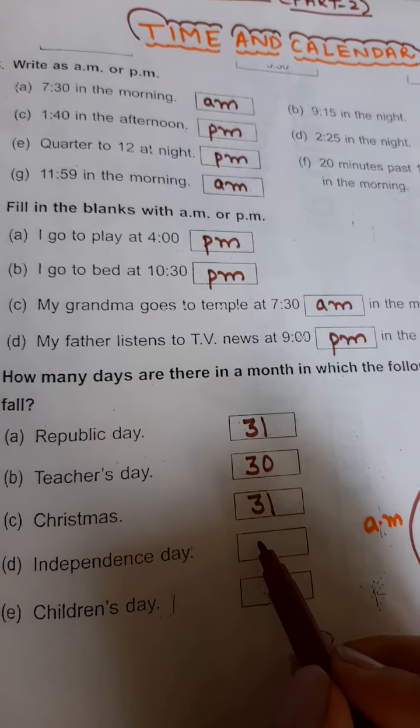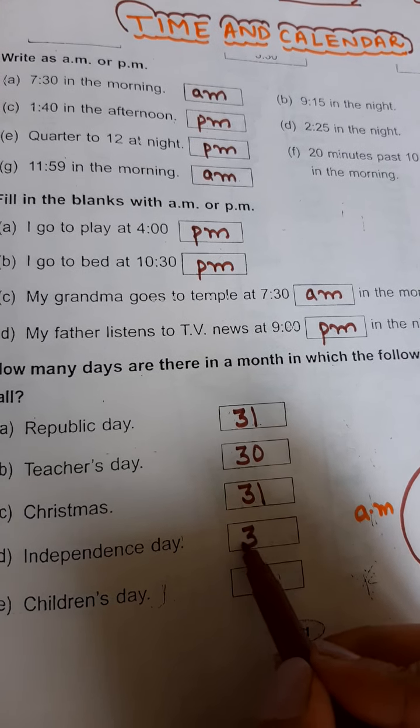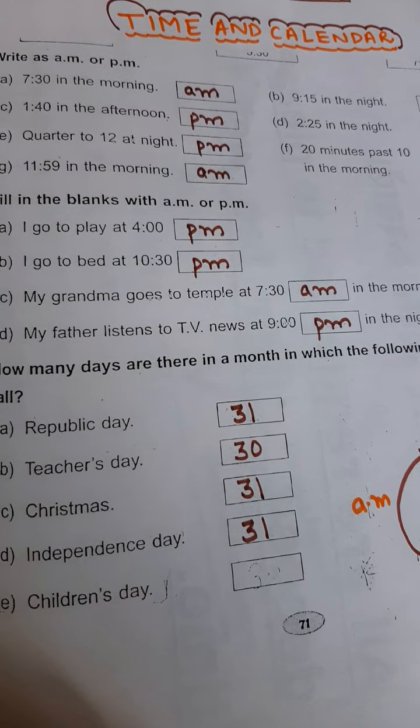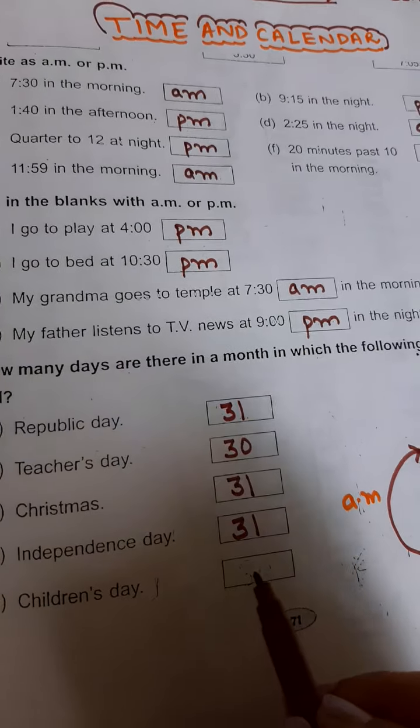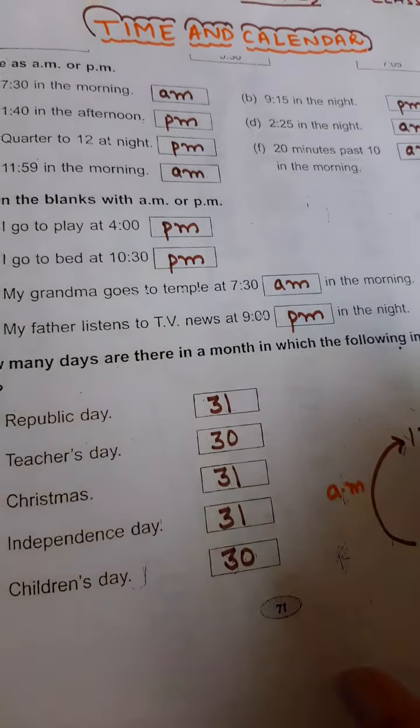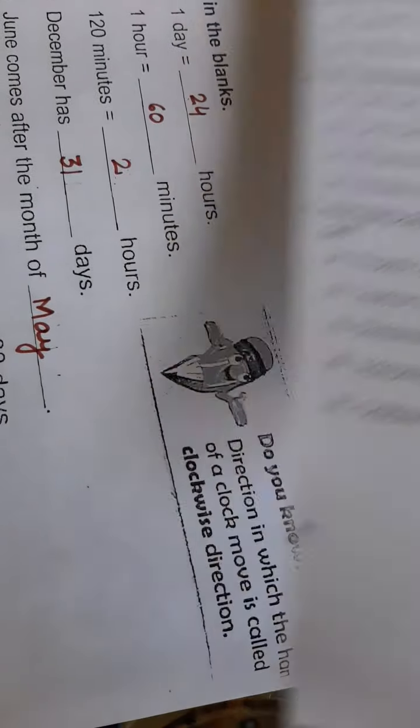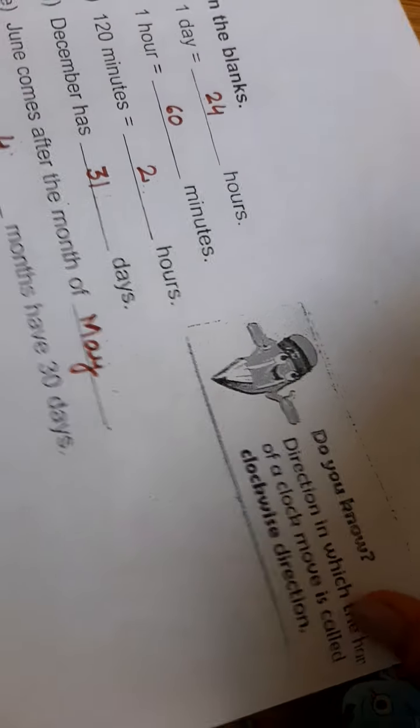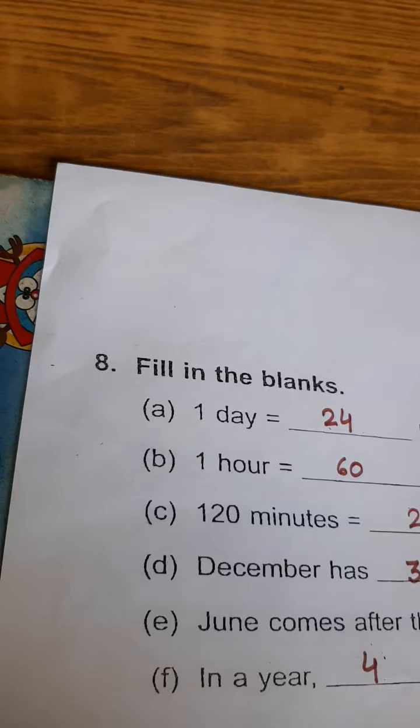Independence Day comes on 15th August, so August has 31 days - write 31 here. Children's Day falls on 14th November, and November has 30 days, so write 30 here. Okay students, now for the next fill in the blanks - this is question number 8.